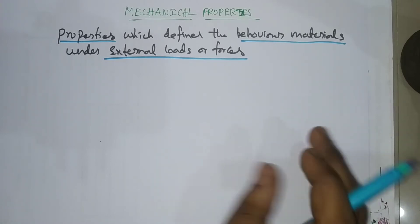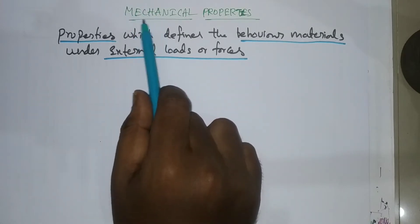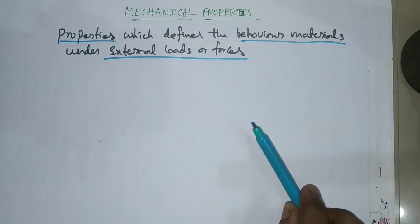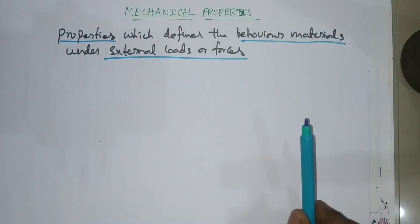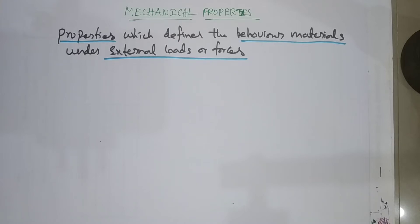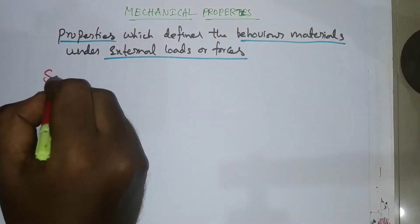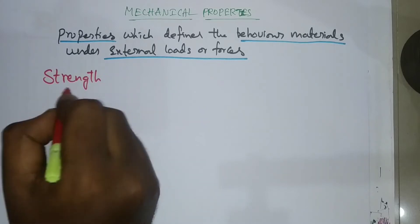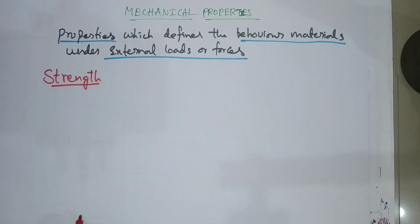These are the mechanical properties. There are around 15 to 20 properties in total, and we will cover them across three videos. The first property is strength.